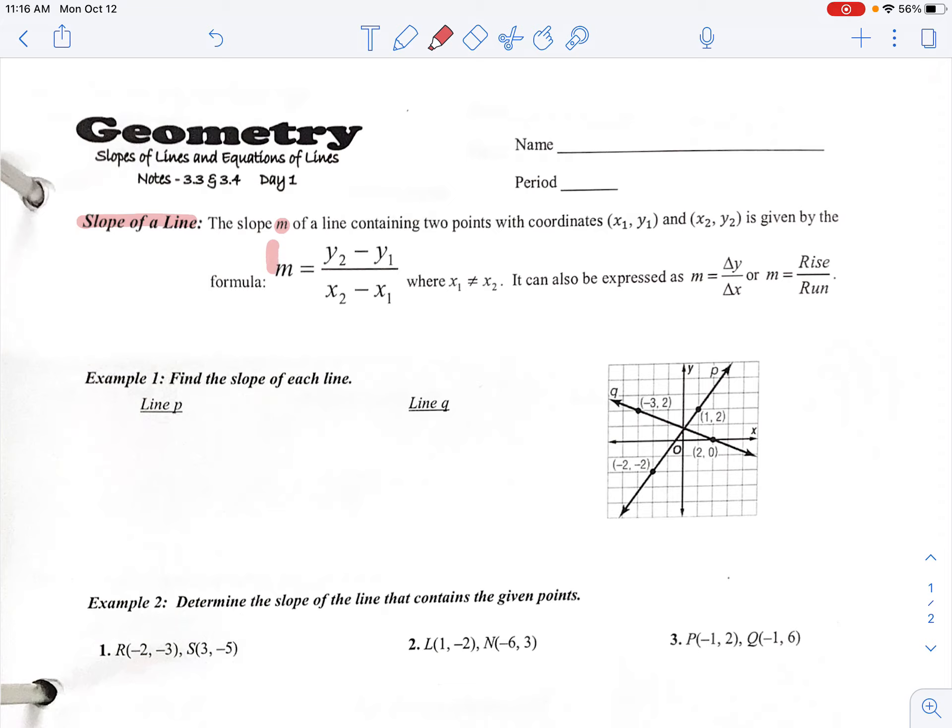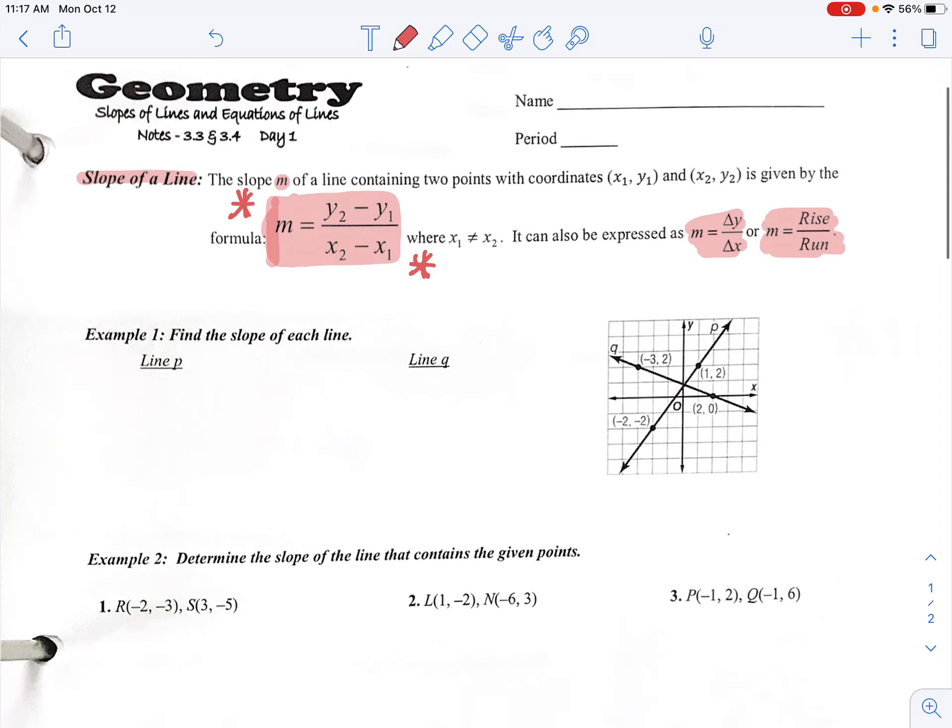So slope of a line. The slope of a line, m, is how we denote slope. Two points. We have coordinates usually. The formula, which is kind of the main way, the slope is y2 minus y1 divided by x2 minus x1. It can also be expressed as the change of y divided by the change of x or rise over run. You're most likely going to be using this formula, y2 minus y1 over x2 minus x1.